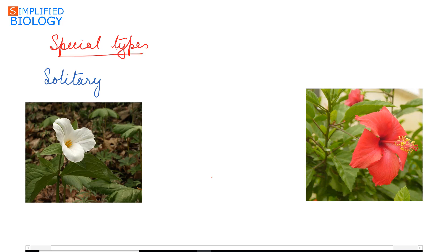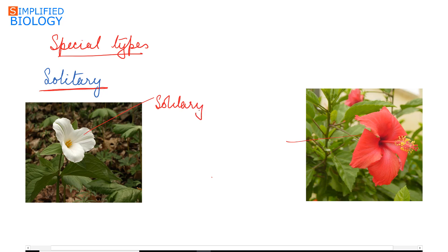In some plants, a single flower develops at a fixed position with no particular arrangement. Such flowers are known as solitary flowers, or solitary inflorescence. When the flower is terminal in position it is known as solitary terminal, and when it is in the axil of a leaf it is known as solitary axillary.